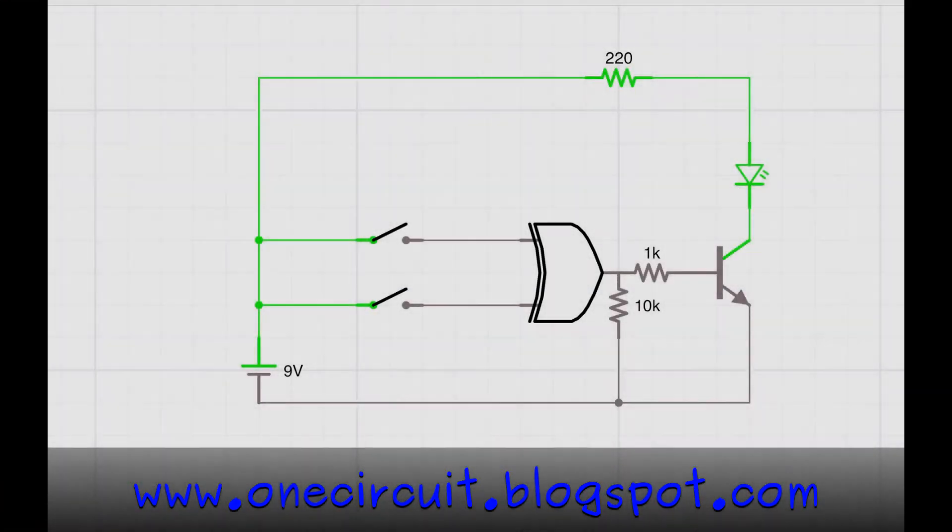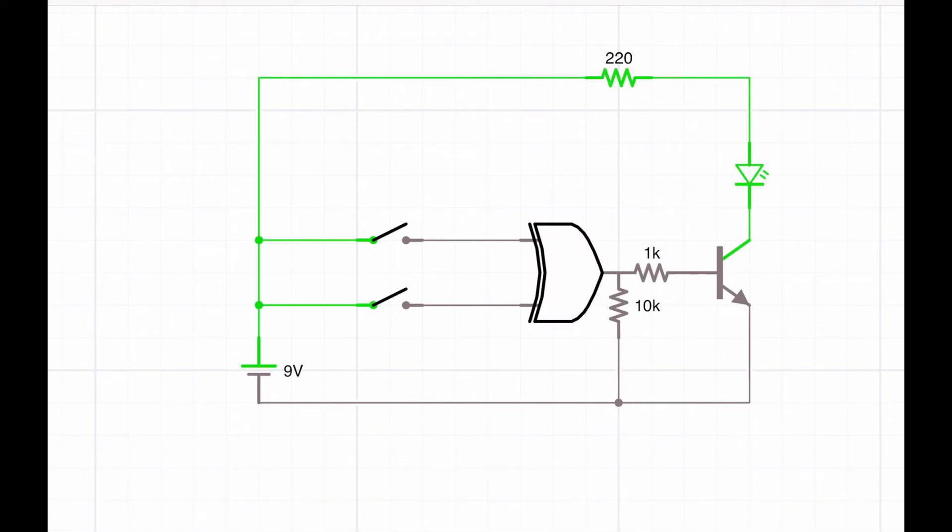All right, so let's do the scenario where it's a room that you walk into and the light is off, so you flick the switch that is closest to you and the light goes on. Then you walk out of the room and turn that switch off and so the light goes off again, that's pretty standard.